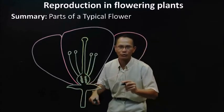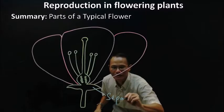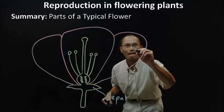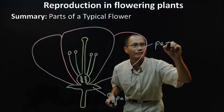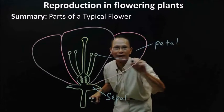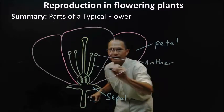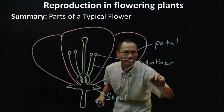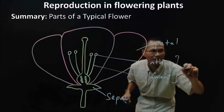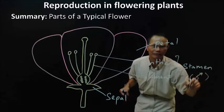We will start from the outer whorl, which is the sepal. And the second whorl is the petals. And the third whorl, which is made up of the anther and the filament. And these two parts are the stamen, which is the male reproductive organ of the flower.